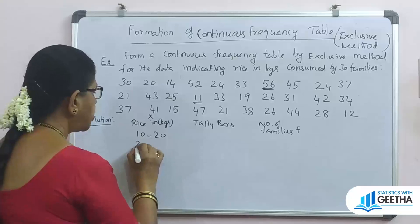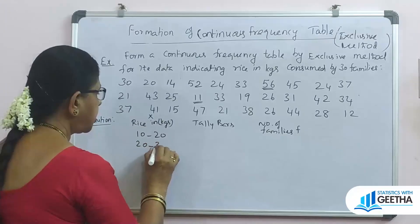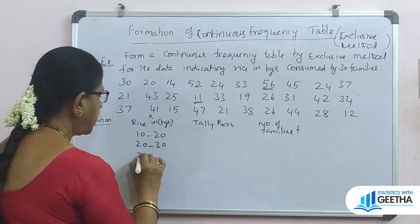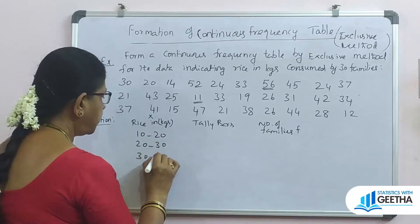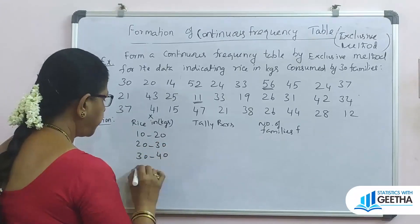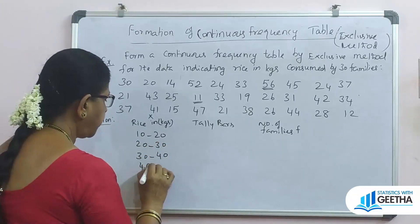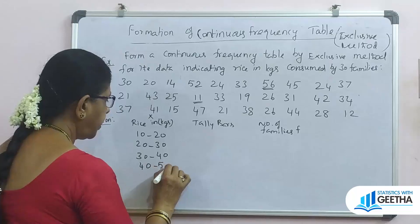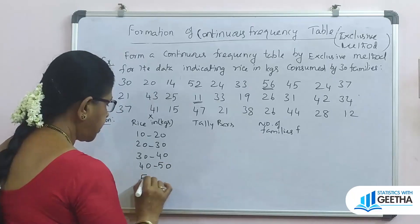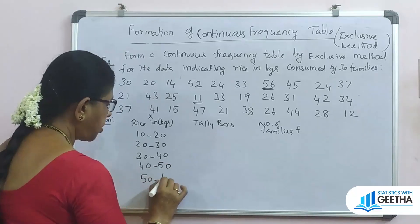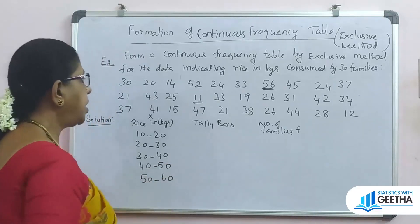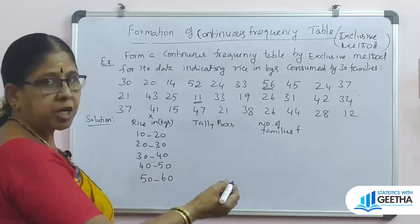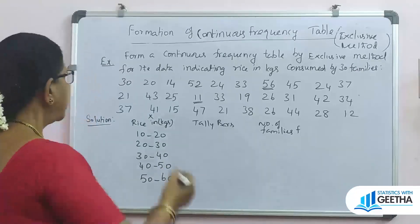Class intervals are multiples of 5 or 10, so it is ideal to use intervals of width 10. The class intervals are: 10 to 20, 20 to 30, 30 to 40, 40 to 50, 50 to 60. Now we are going to place tally bars. In this method, the upper limit 30 is included in the next class.